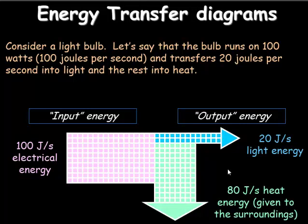From this diagram I can recognize that 100 joules per second of electrical energy is going into my light bulb, 20 joules per second is coming out as useful energy, and 80 joules per second is being given up as wasted heat energy.